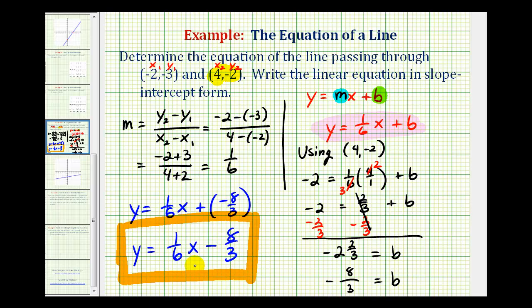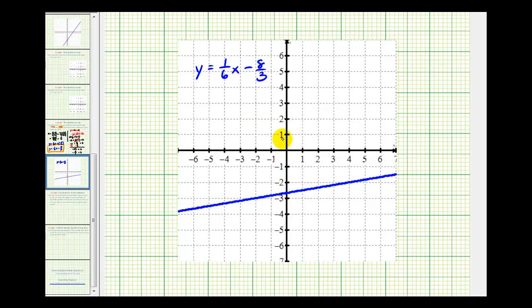Let's go ahead and verify this graphically. Notice how the y-intercept is negative eight-thirds, or negative two and two-thirds, as we see here.